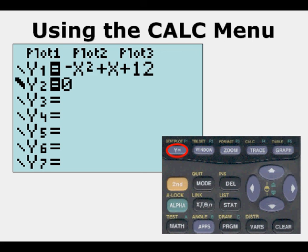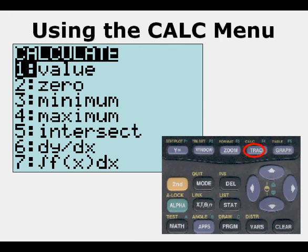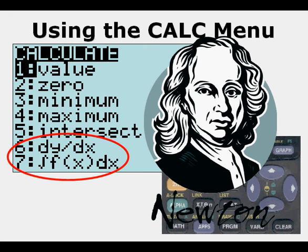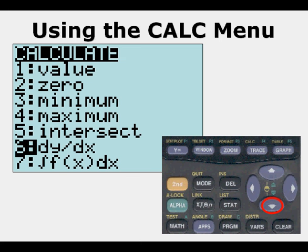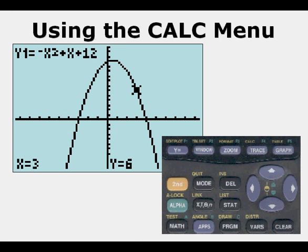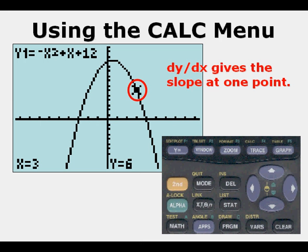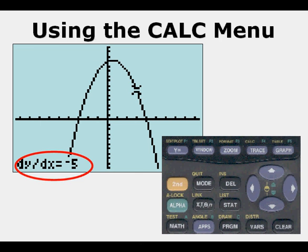We delete y2 and go to second trace to look at options 6 and 7 — these are calculus options. Newton is here to represent that. We choose option 6 first: we can scroll anywhere on this parabola and evaluate the slope — dy/dx, the change in y relative to the change in x. We press enter and find that dy/dx is negative 5, so the slope at this point is negative 5. We've just done calculus.